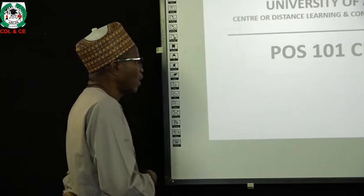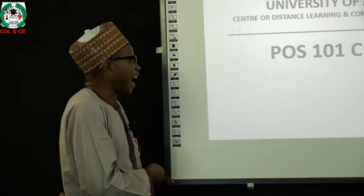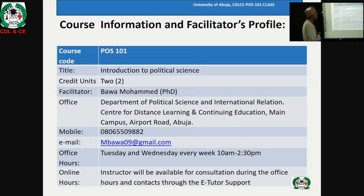This is POST 101 class for students offering political science — an introductory class. The course title is Introduction to Political Science, a two-credit unit course. The facilitator's name is Bawa Mohammed, from the Department of Political Science and International Relations, Centre for Distance Learning and Continuing Education, Main Campus, Airport Road, Abuja.